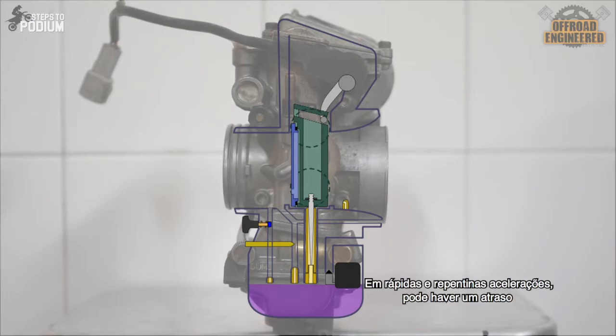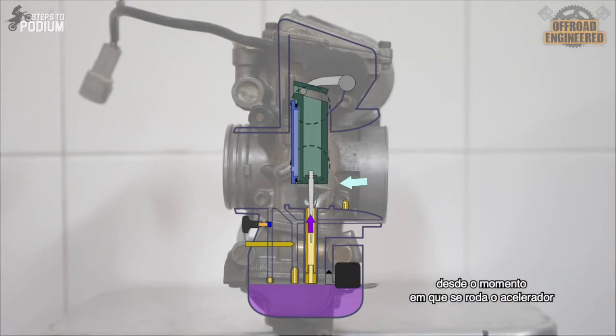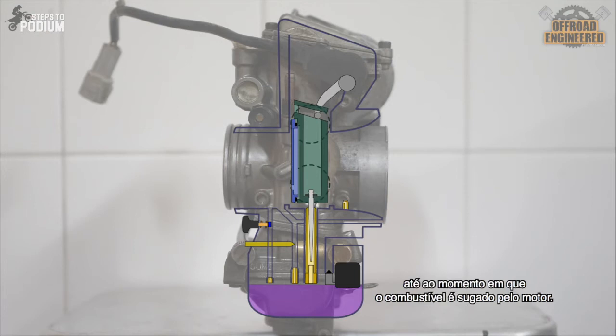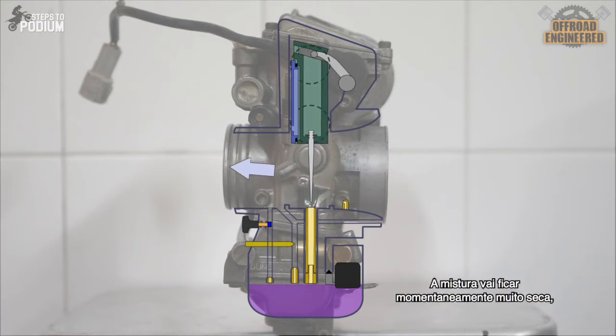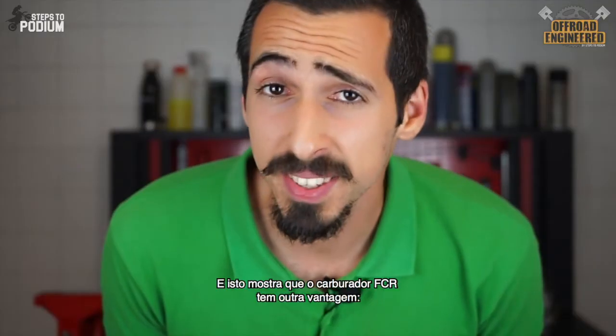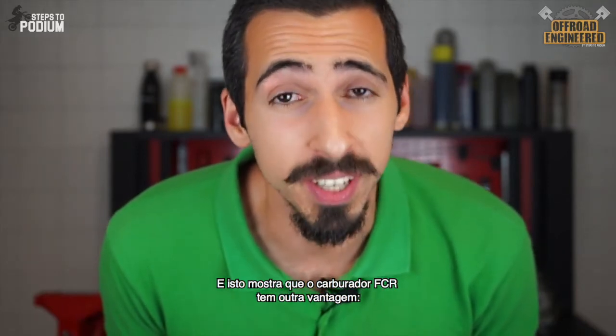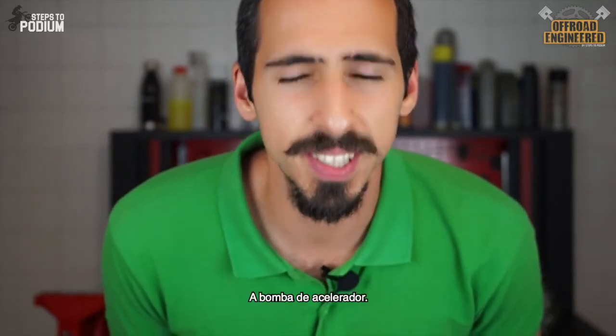On sudden and quick accelerations, there can be a lag from the moment you open the throttle to the moment the fuel is being sucked by the engine. The mixture will momentarily become too lean and can make the engine stall in typical four-stroke fashion. This is where the flat CR carb brings another trick to the table, the accelerator pump.